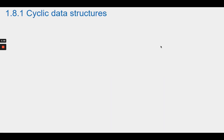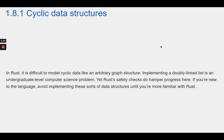Section 1.8.1 Cyclic Data Structures. In Rust, it is difficult to model cyclic data, like an arbitrary graph structure. Implementing a doubly-linked list is an undergraduate-level computer science problem. Yet Rust's safety checks do hamper progress here. If you're new to the language, avoid implementing these sorts of data structures until you're more familiar with Rust.